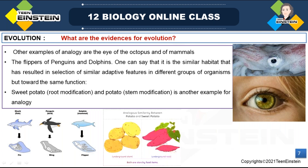Another example for analogy from plants: sweet potato is a root modification, while potato is an underground stem modification — both look similar but are structurally different. These examples of analogous and homologous organs from plants and animals are very important. You will get exam questions like: 'Are flippers of penguin and dolphin homologous or analogous?' Don't get confused between homologous and analogous.